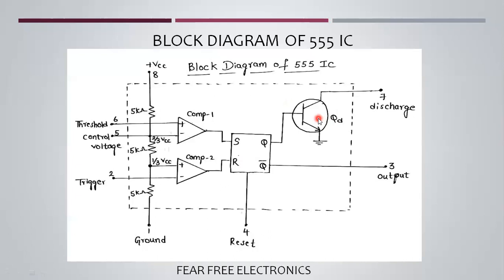The transistor is used for discharging. In particular applications — astable and monostable — it is used with capacitors and resistors. The transistor plays a major role in capacitor charging and discharging.